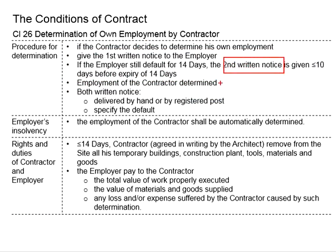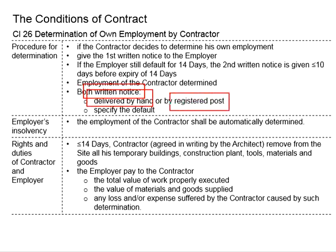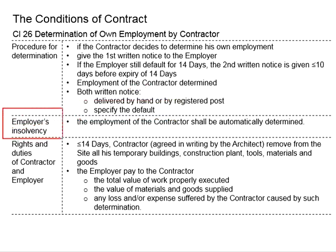After the second notice, the employment of the contractor is determined — meaning the contractor has officially withdrawn himself from the work. This return notice should not be given without good justification. Both return notices shall be delivered by hand or by registered post to ensure the employer actually receives them, and they should clearly specify the defaults of the employer. In the case of the employer's insolvency — meaning bankruptcy — the employment of the contractor shall be automatically determined.